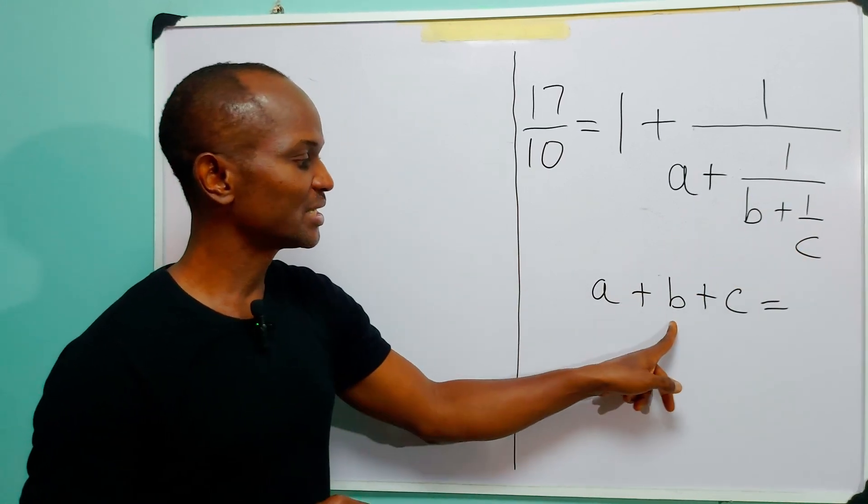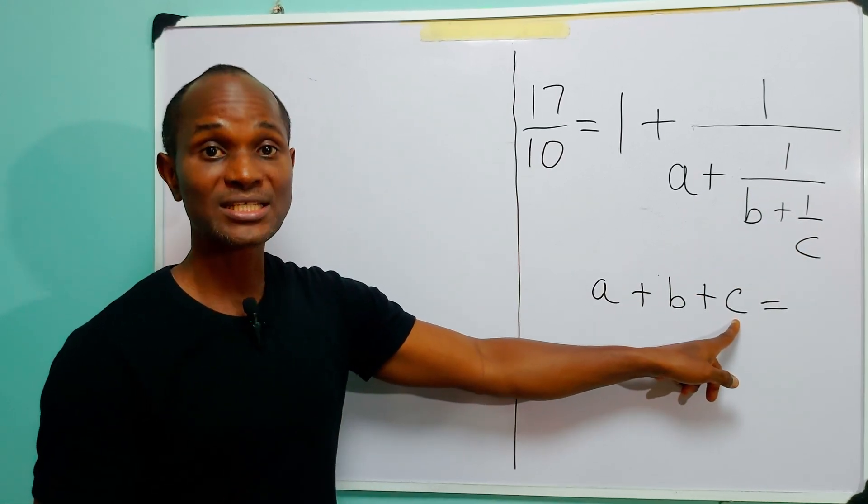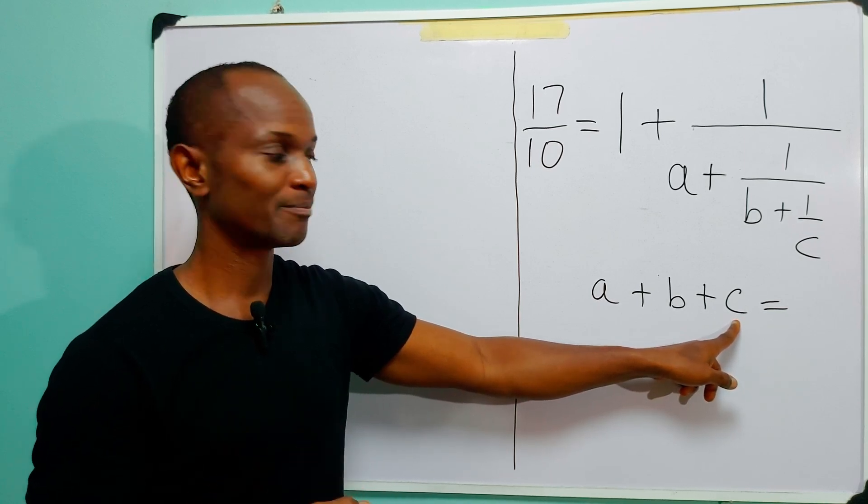And that A, B and C are all positive integers. That is, positive whole numbers.